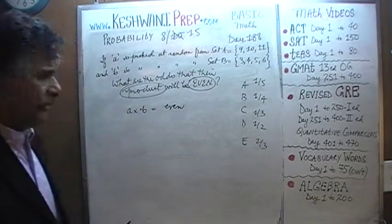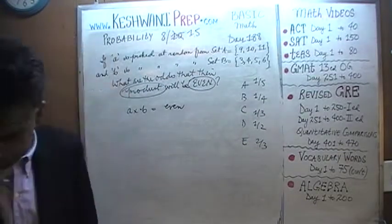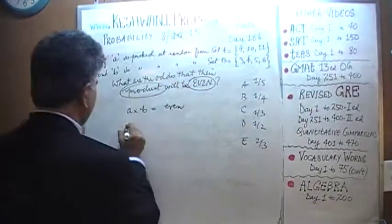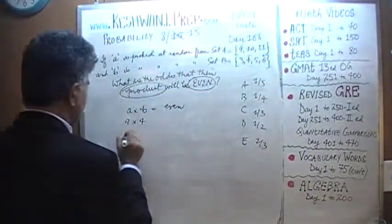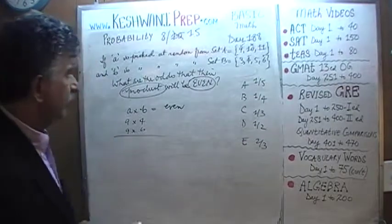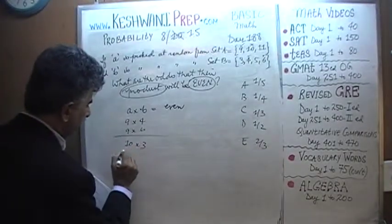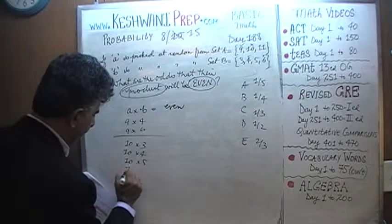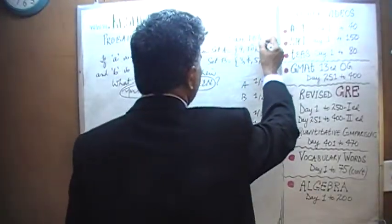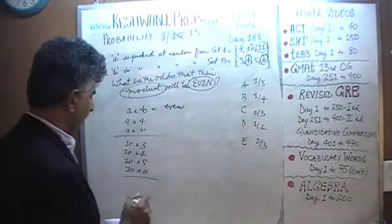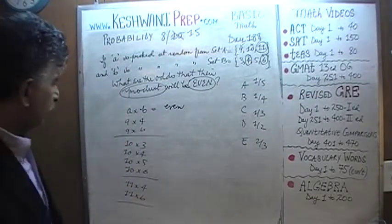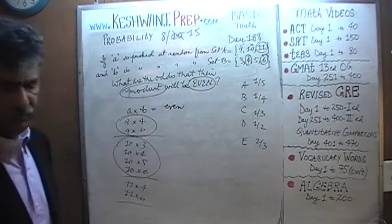Let's find out how many different ways we can have the product be even. Starting with 9: we can have 9 times 4, or 9 times 6 — both even. When we do 10, it doesn't matter what we multiply it by: 10 times 3, 10 times 4, 10 times 5, or 10 times 6 — they are all going to be even. Moving on to 11: 11 times 4 is 44, and 11 times 6 is 66 — both even.